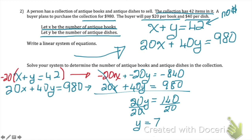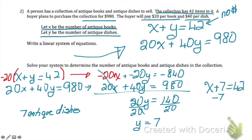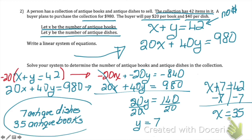Remember that y represents antique dishes, so now I know there are 7 antique dishes in the collection. To find the number of books, I'll use my first equation: x plus y equals 42. I substitute 7 for y and solve, getting x equals 35. So there are 35 antique books in the collection. There's going to be a question like this on the unit test — remember, when you are combining two things, you can set up a system of equations and then use elimination.